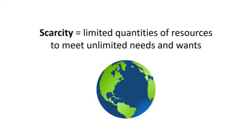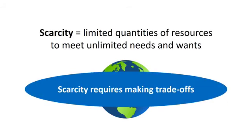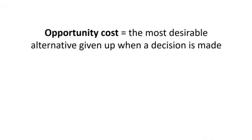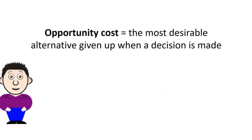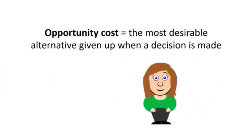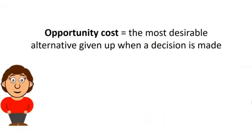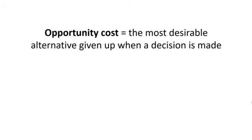Scarcity is the permanent reality that the earth's resources are limited but people have unlimited needs and wants. Scarcity therefore requires us to make choices and trade-offs. When talking about making trade-offs, opportunity cost is a very important concept. Opportunity cost refers to the most desirable alternative given up when a decision is made — sometimes described as your next best option. Opportunity cost tells us that choosing one thing means giving up the opportunity to have or do the other.